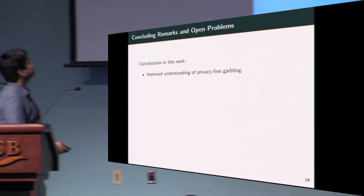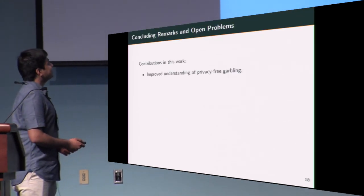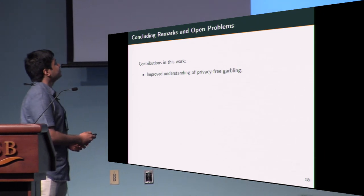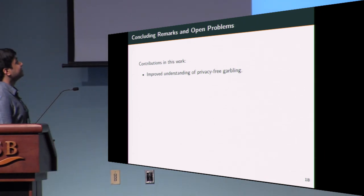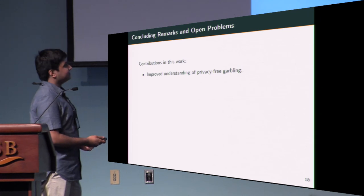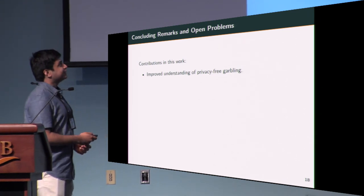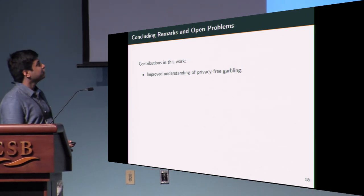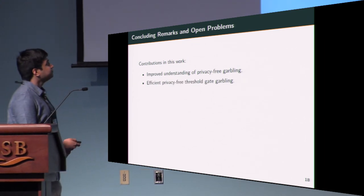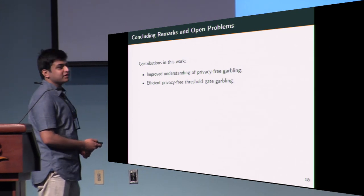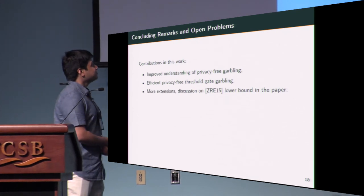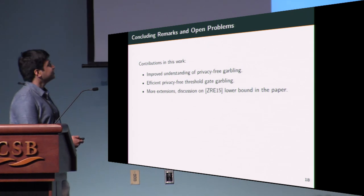Some concluding remarks. Generally, what we do here: we have a better understanding of privacy-free garbling now with our AND and threshold gate garbling schemes. Also, the fact that our garbling scheme uses only linear operations as it's information theoretic and doesn't have a blow-up in key size. Despite this, it fits quite well in the model of Zahur and others and still overcomes that one ciphertext lower bound for the privacy-free setting. We discussed this in more detail in the paper. We now have efficient privacy-free threshold gate garbling for threshold gates in Boolean circuits. We have more extensions of this scheme and a more detailed discussion on the lower bound in our paper, which I encourage you to read.